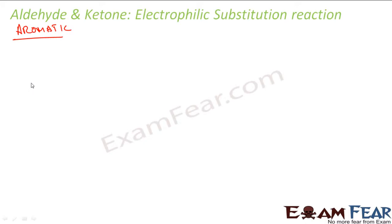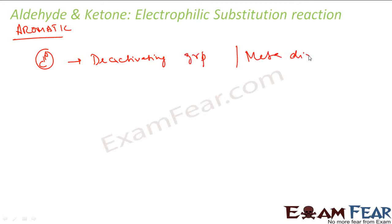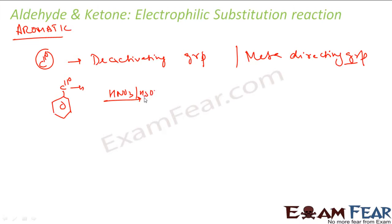The carbonyl group (CHO or C=O) is a deactivating group and also a meta-directing group. For example, take benzaldehyde and perform nitration using HNO₃ and H₂SO₄. Since the CHO group is meta-directing, you get the nitro group at the meta position, giving m-nitrobenzaldehyde. The detailed mechanism was covered in previous chapters.